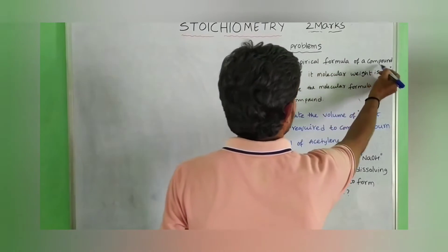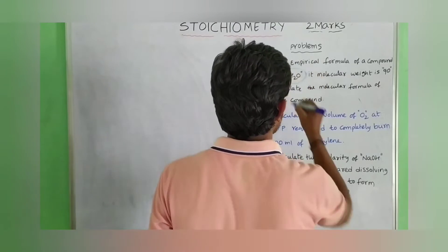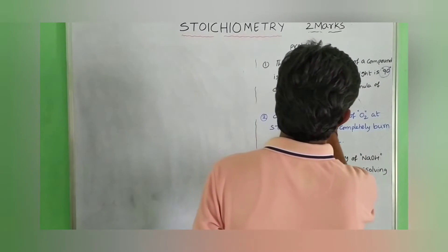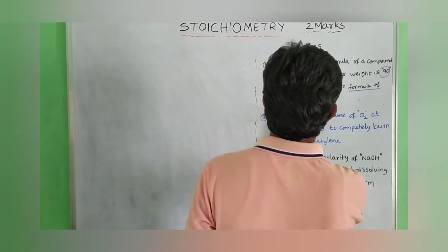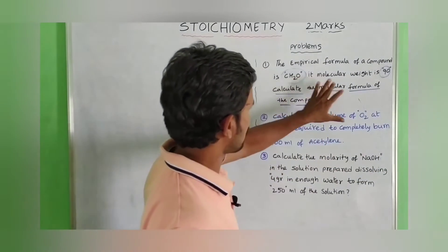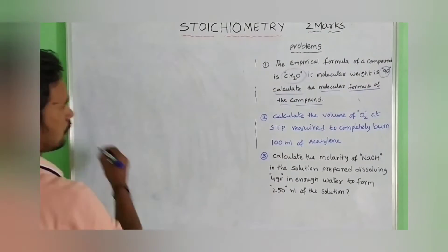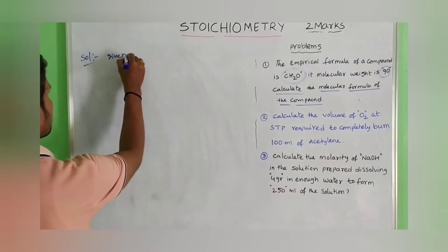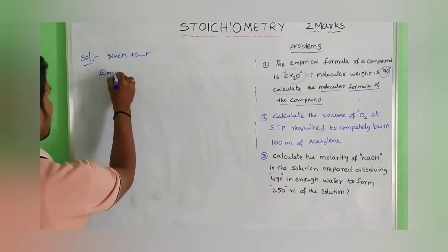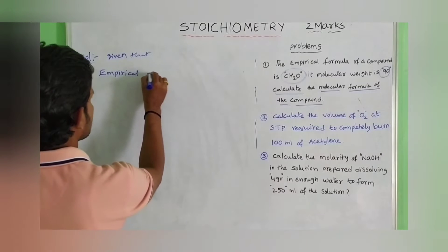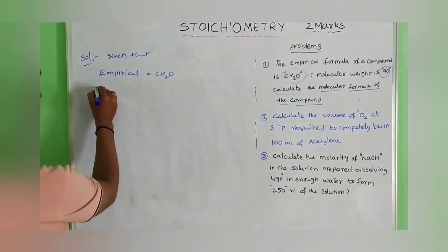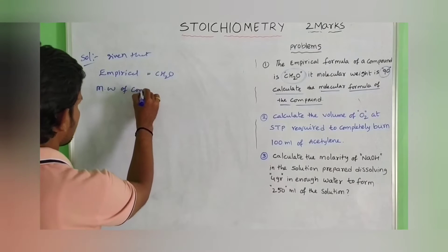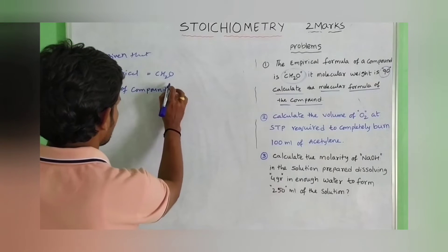Next problem: the empirical formula of a compound is CH2O, and its molecular weight is 90. Calculate the molecular formula of the compound. Given: empirical formula is CH2O, and molecular weight of the compound is 90.